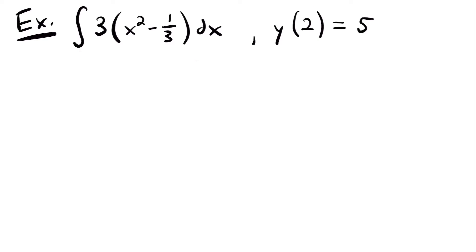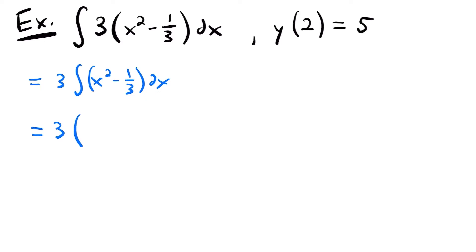Here we have the indefinite integral of 3 times the quantity x squared minus 1/3 dx, and we have the initial condition that y evaluated at 2 should be equal to 5. If we go through and evaluate this integral, we'll start by pulling out this 3. So we have 3 times the integral of x squared minus 1/3 dx. Then applying the power rule, this is equal to 3 times x to the power of 2 plus 1 divided by 2 plus 1, minus 1/3 times x. And we don't forget to add c.